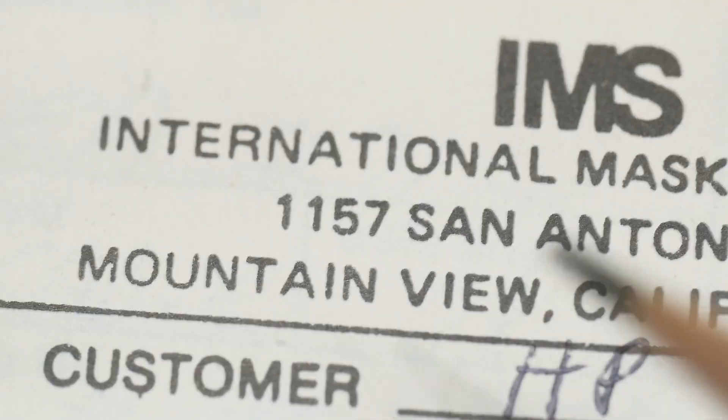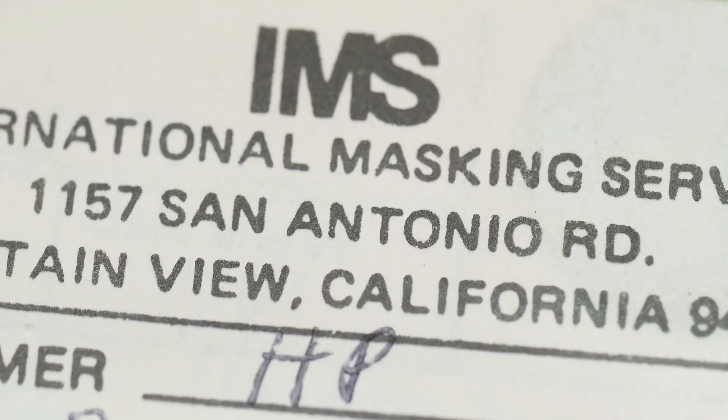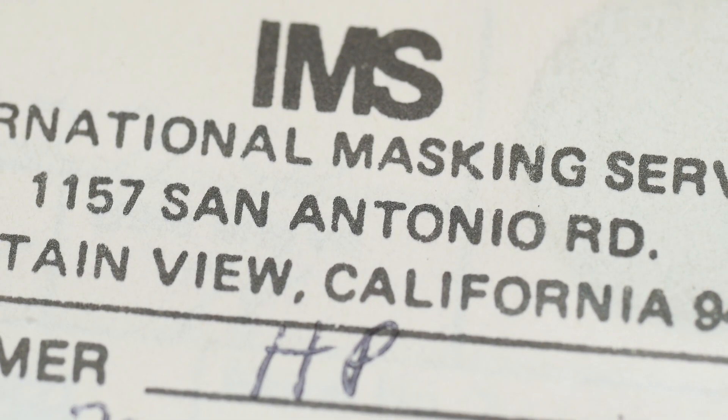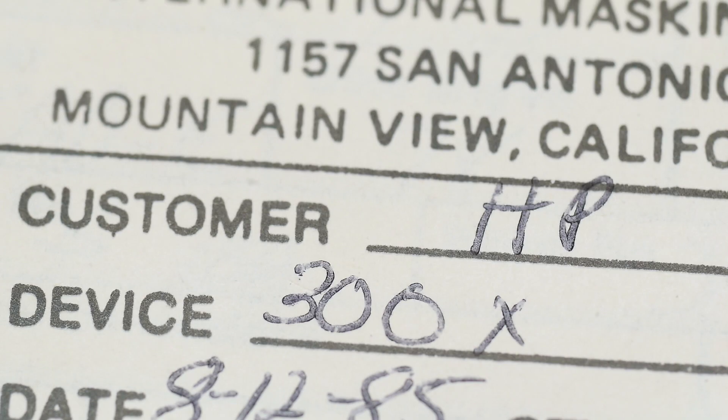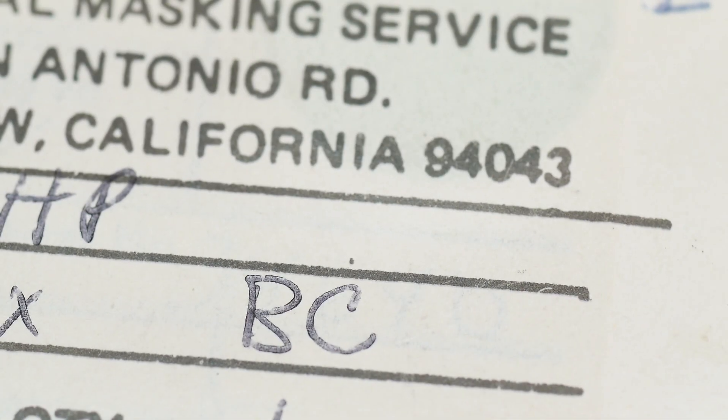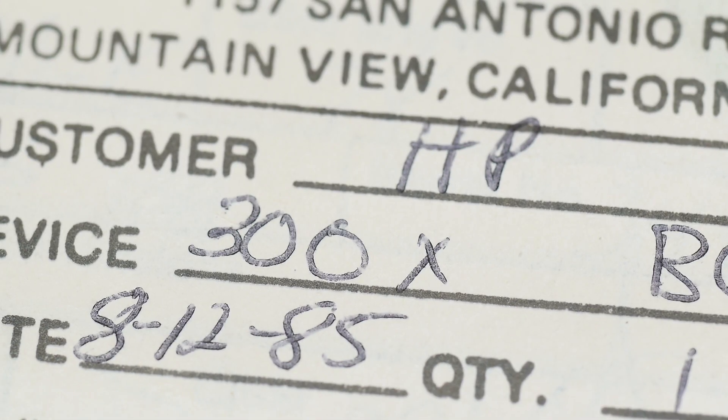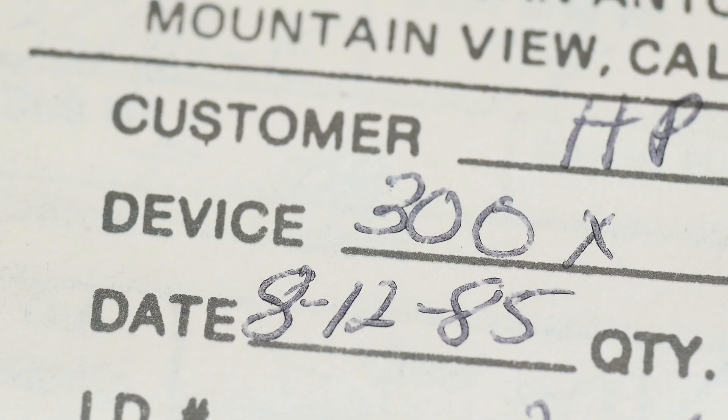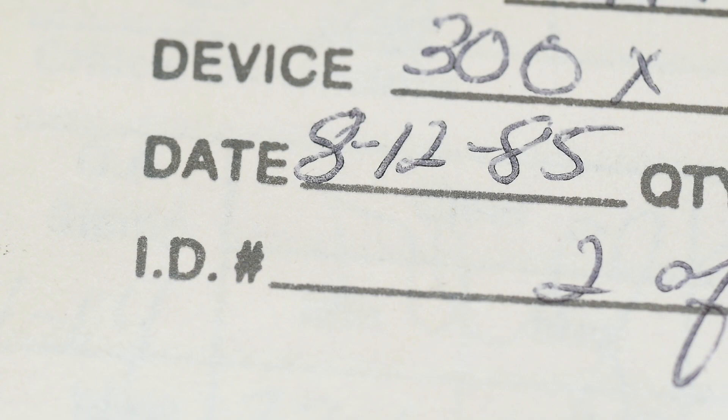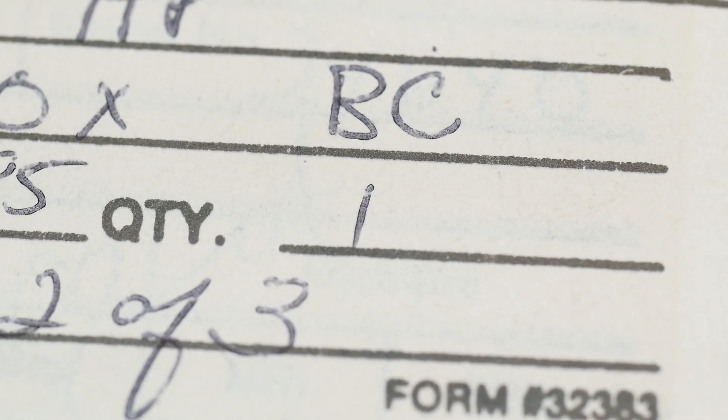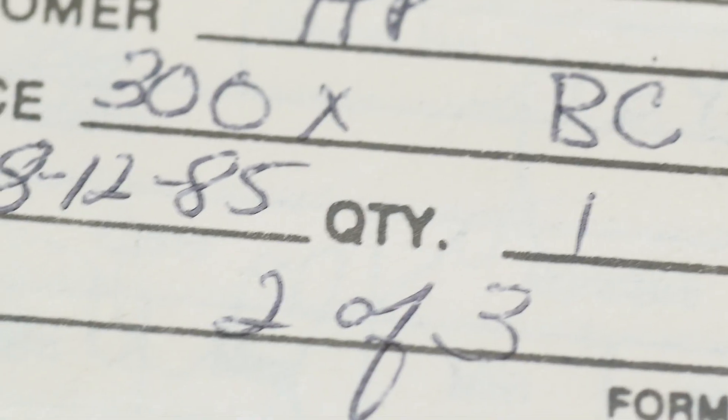Okay. IMS International Masking Services. So they did the photo reduction and made this plate. They were here in Mountain View, California. Home of Google now. Customer was HP. And there's the device. 1985. Quantity two of three. So they asked for three of these things. Yeah. Pretty cool.